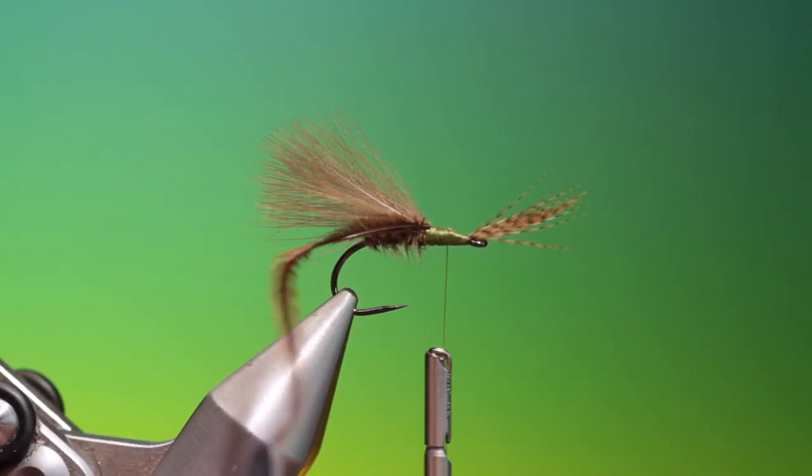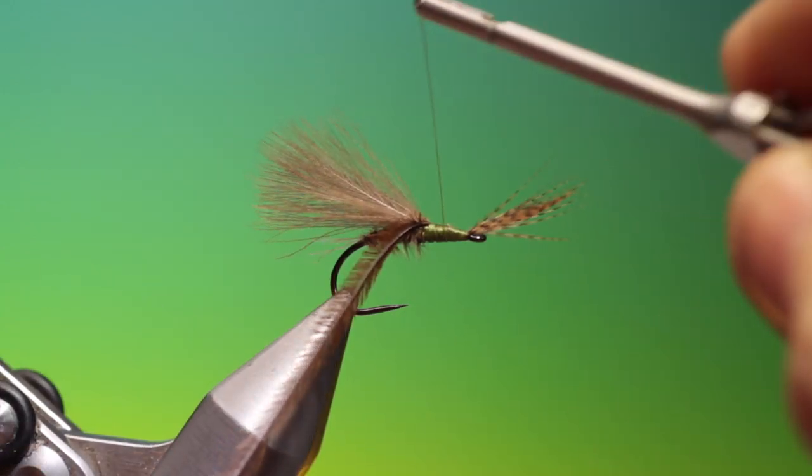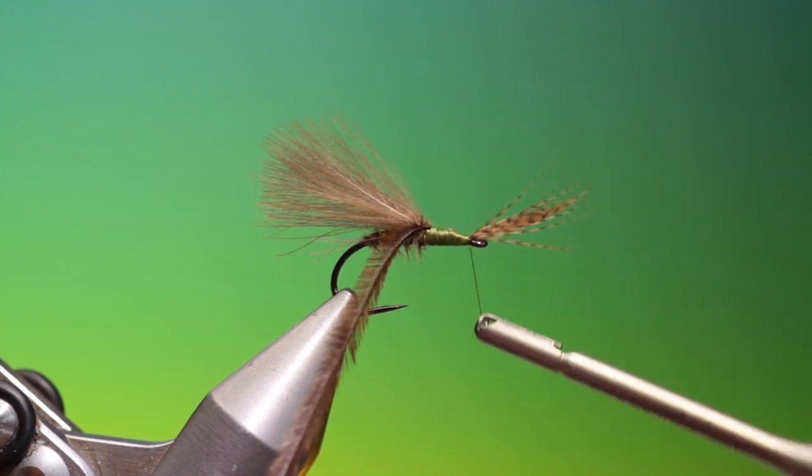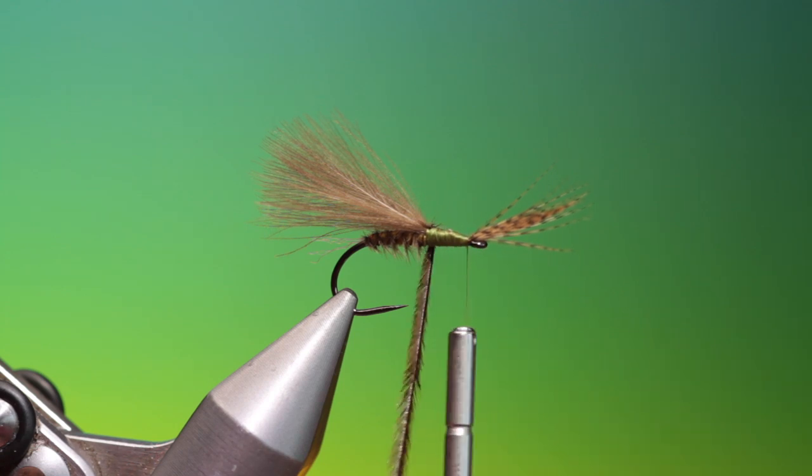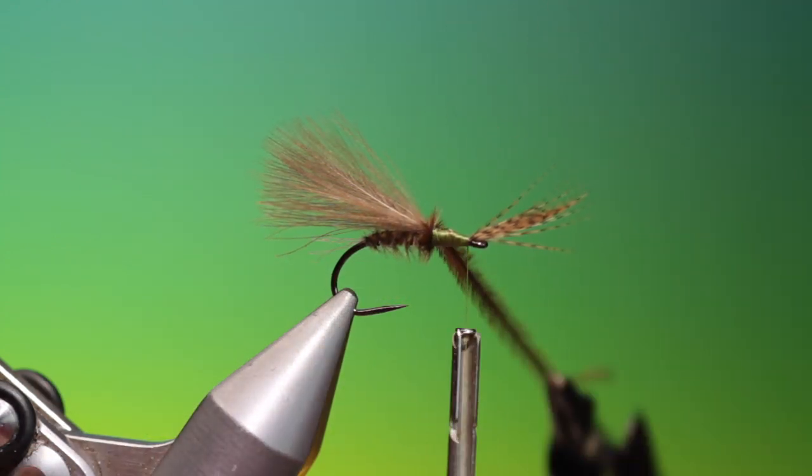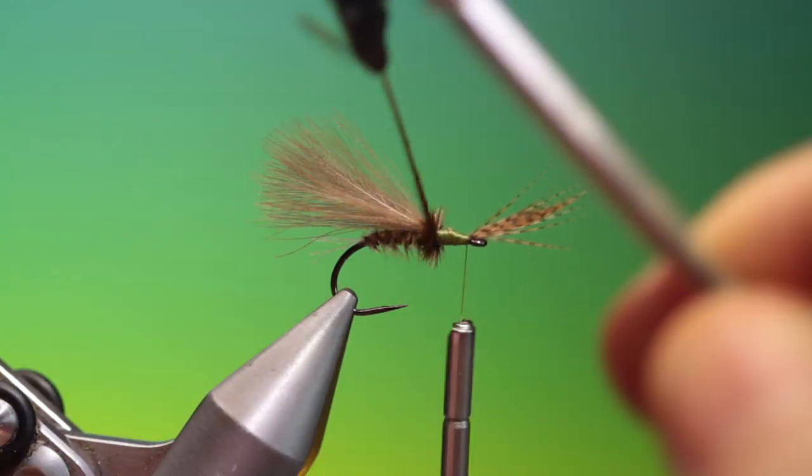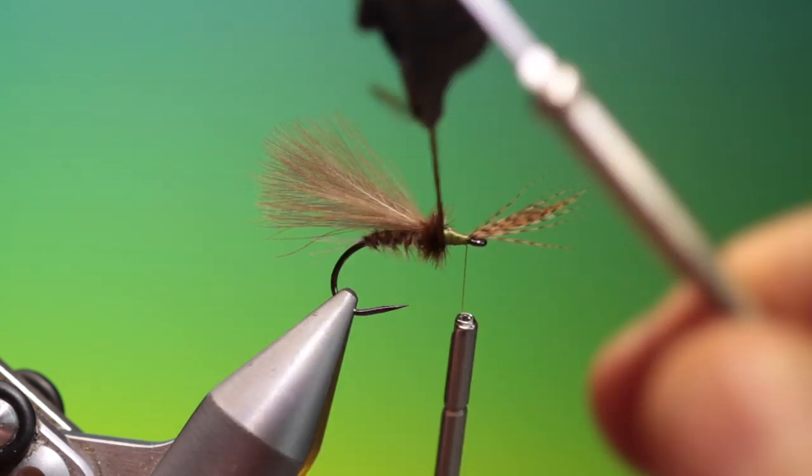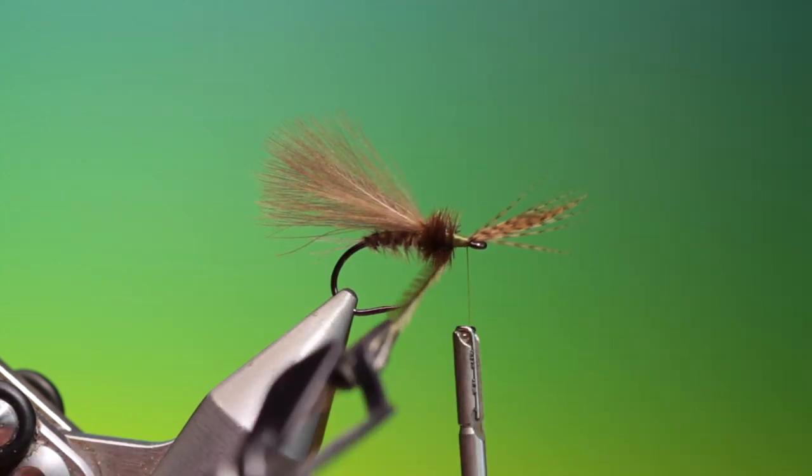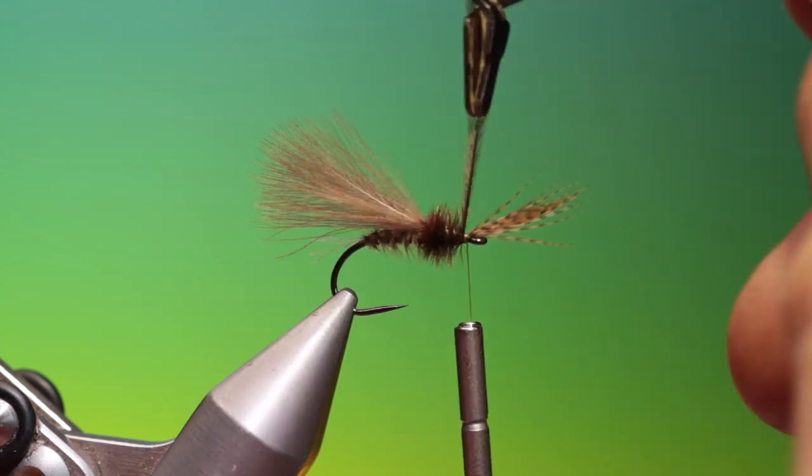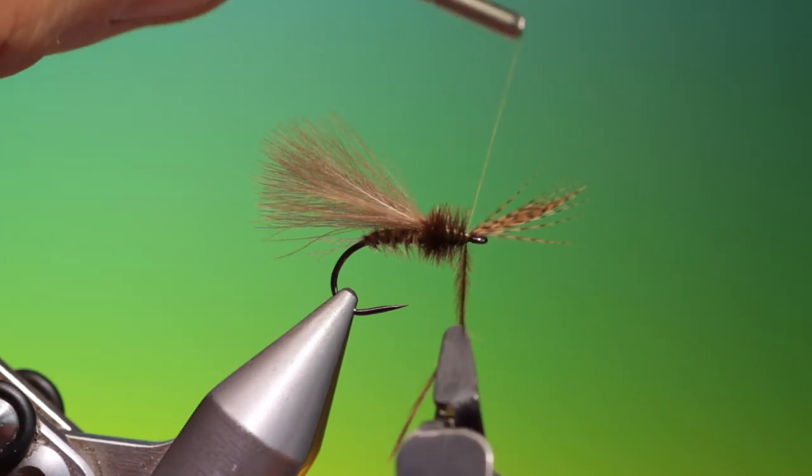We place our hackle plier on the ostrich curl for the thorax and move this back away and then we can wrap this for the thorax. This has proven a very very good emerger for me both in still water and running water, so it's well worth a try. And of course you can do it in different colors and different sizes.